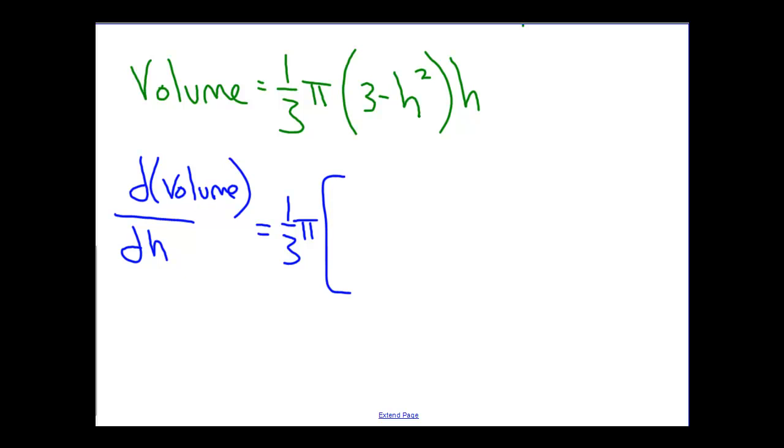Then with the product rule, I'm going to take the derivative of the first, so I'm going to take the derivative of 3 minus H squared. That's going to give me minus 2H times the second, which is H, plus the first, which is 3 minus H squared, times the derivative of H, which is simply 1. So we end up with this relationship here.